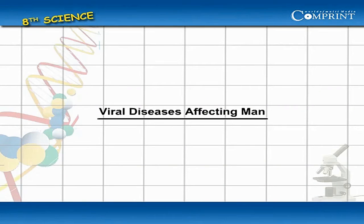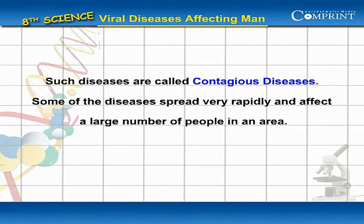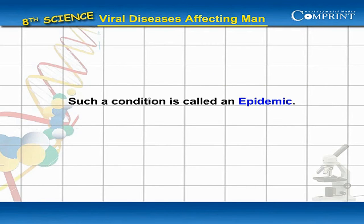Viral Diseases Affecting Man. Several of these diseases spread from one individual to another. Such diseases are called contagious diseases. Some of the diseases spread very rapidly and affect a large number of people in an area. Such a condition is called an epidemic.